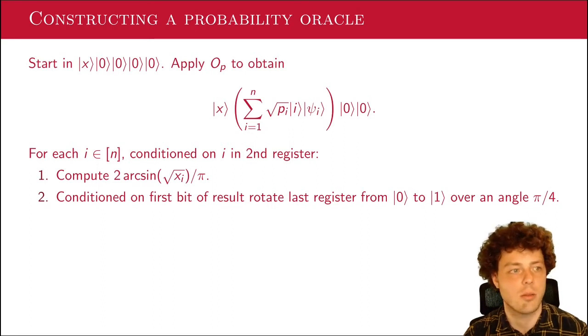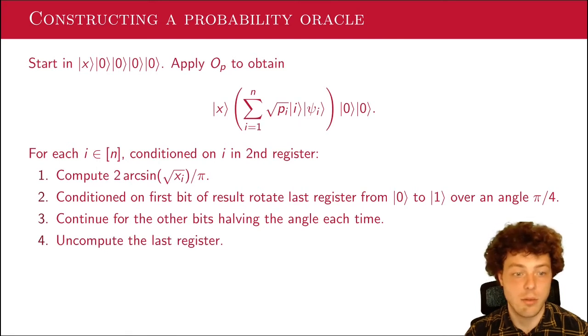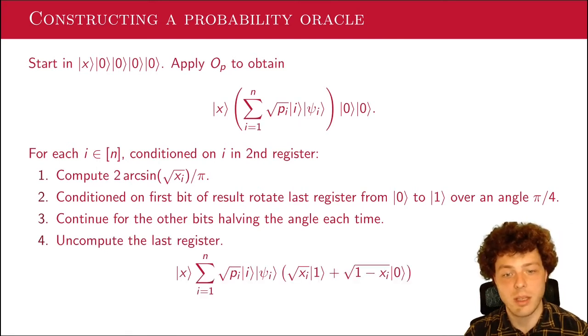And what we'll do, we'll compute two times the arcsine of square root of x_i over π in the fourth register. And then conditioned on the first bit of the result of this, we rotate the last register a little bit from the zero state to the one state. We first rotate over an angle π over four. Then conditioned on the second bit, we rotate over π over eight. Then on the third bit, π over 16 and so on. And if you do this and you can walk through what this does, and that's why we particularly took two times the arcsine of square root of x_i over π.